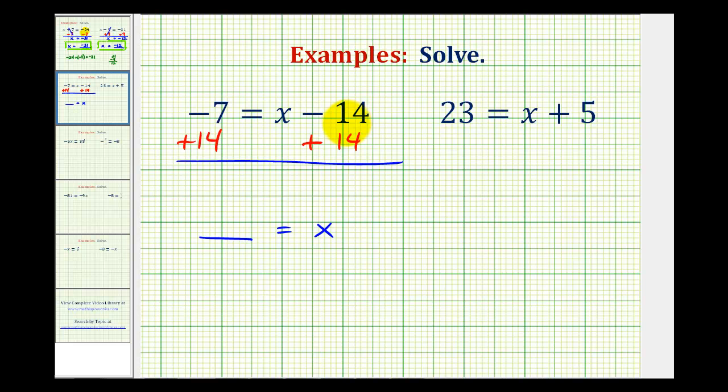Notice on the right side of the equation, minus 14 plus 14 simplifies to zero. So we're left with x on the right side, and then on the left side we have negative 7 plus 14. Well, negative 7 plus 14 would be positive 7. So our solution is 7 equals x, but this is often written in the opposite direction as x equals 7.